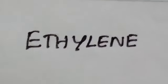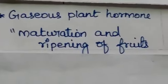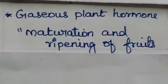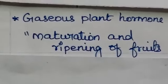Ethylene is a gaseous plant hormone. It is mainly concerned with the maturation and ripening of fruits.